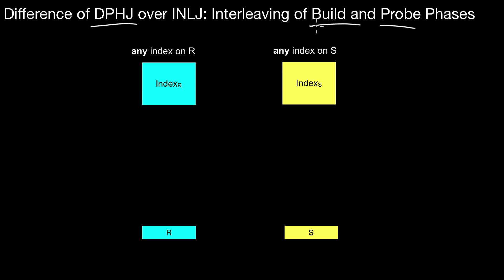You first build one of the indexes up. If it already exists you can just skip that step and directly probe it. Then in the second phase you probe that index. Here in double pipeline index join you interleave those two phases. Therefore you need two indexes, but therefore you can also operate on inputs that are unbounded and you can produce join results quicker.